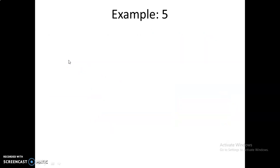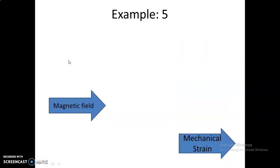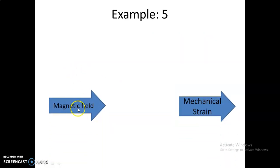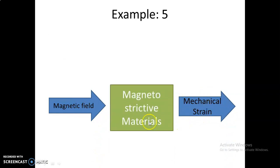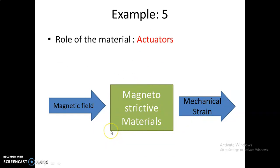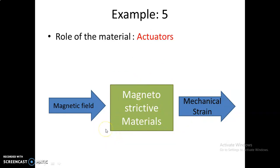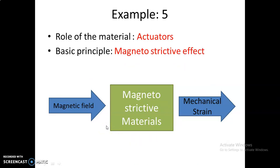If you apply a magnetic field on a material and it produces mechanical deformation or strain, then the material is known as a magnetostrictive material. Here, the role of the material is as an actuator, and the basic principle is the magnetostrictive effect — the Joule effect. The converse is also possible.